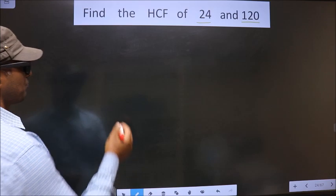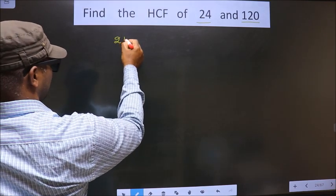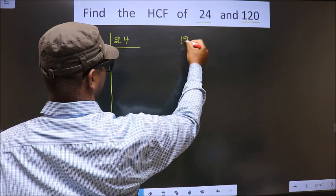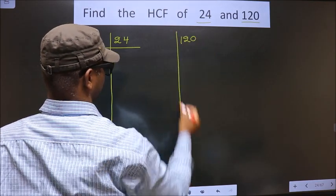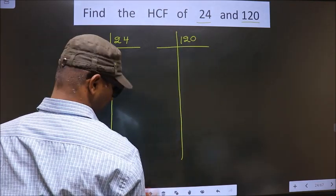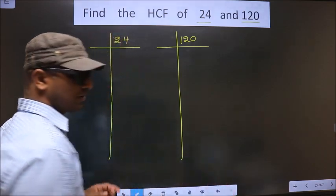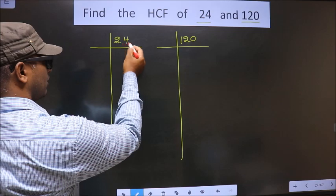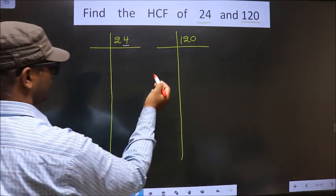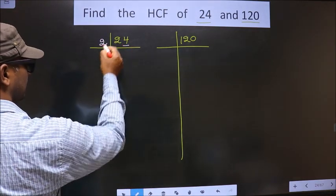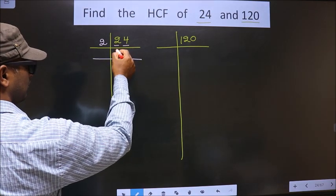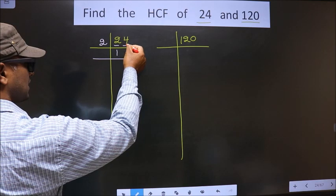That is, 24 and 120. Now, for this number, the last digit is 4 which is even. So we take 2 here. First number is 2. When do we get 2 in the 2 table? 2 times 1 is 2. Next number is 4. When do we get 4 in the 2 table? 2 times 2 is 4.